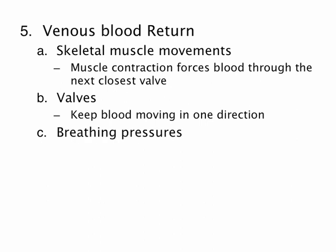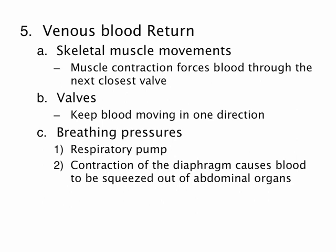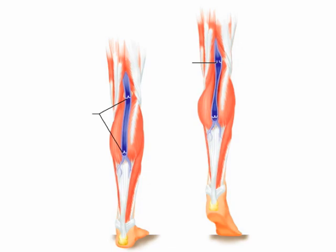Another mechanism to get blood back to the heart is breathing pressure. As you breathe, your diaphragm moves downward, compressing all the organs inside the abdominal cavity, milking those organs and pushing blood back toward the heart. This is known as the respiratory pump — contraction of the diaphragm pushes down on the abdominal organs and causes blood to be squeezed out of them. A picture shows valves inside veins and how contraction of the calf muscle compresses the vein, forcing blood up through the next closest valve toward the heart.